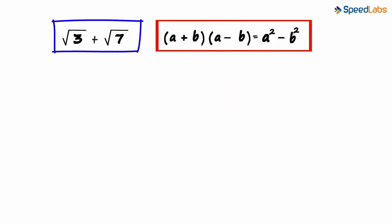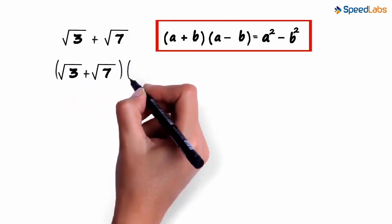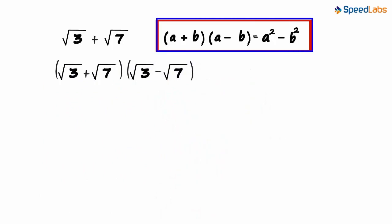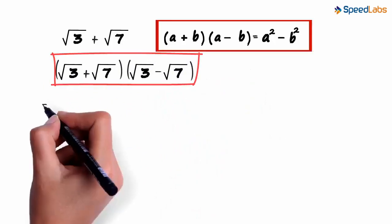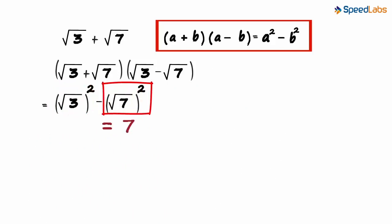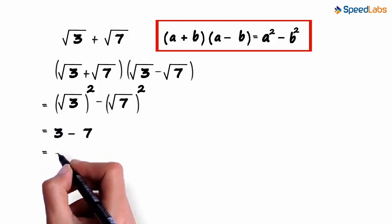So what do we multiply this with? Let's try multiplying √3 plus √7 with √3 minus √7. Using this identity, we can say that this equals √3 squared minus √7 squared. √3 squared equals 3 and √7 squared equals 7. Hence this equals 3 minus 7, which equals minus 4.